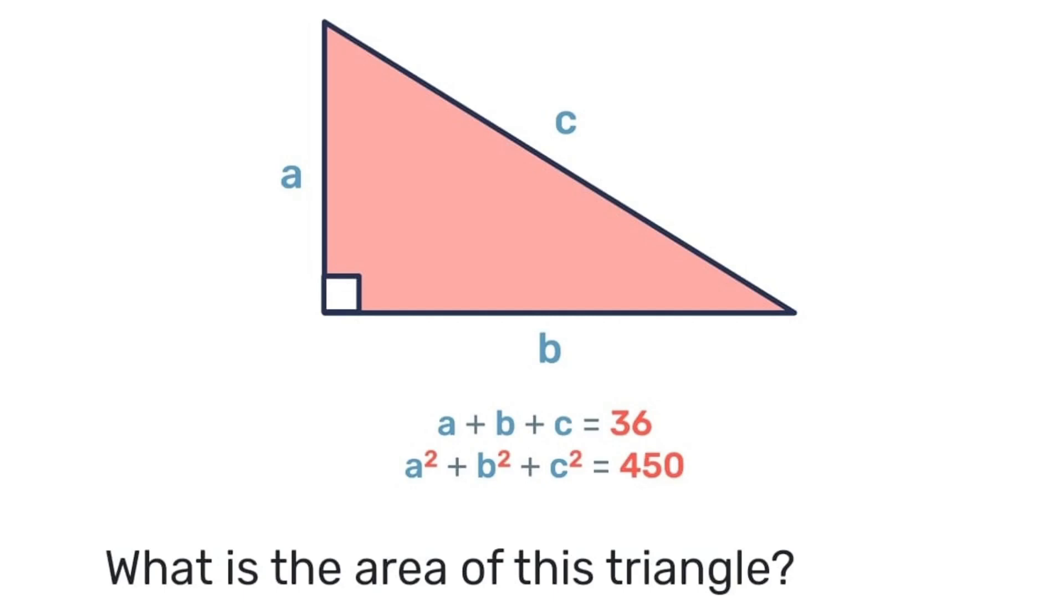We're told that a plus b plus c is 36, and also a squared plus b squared plus c squared is equal to 450. With that we're to determine the area of this triangle.